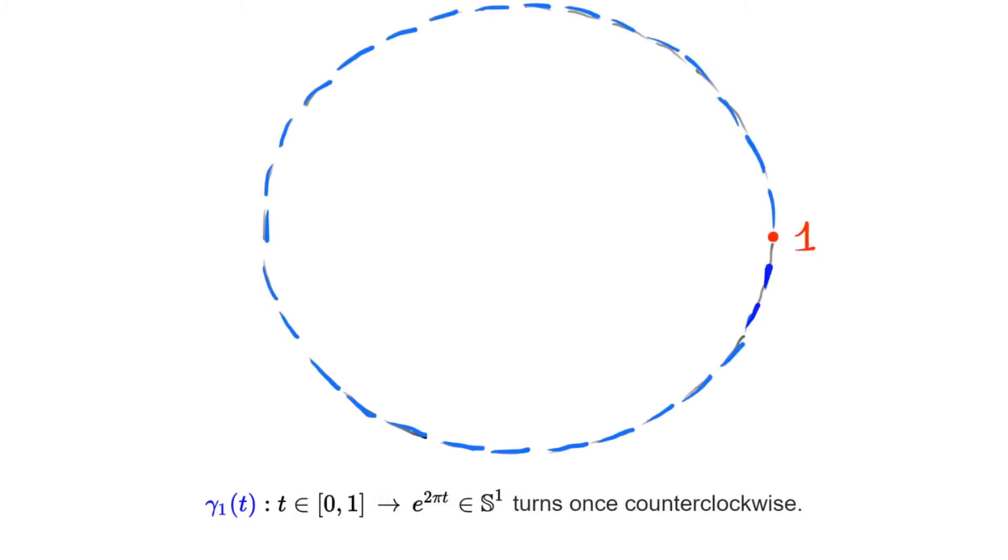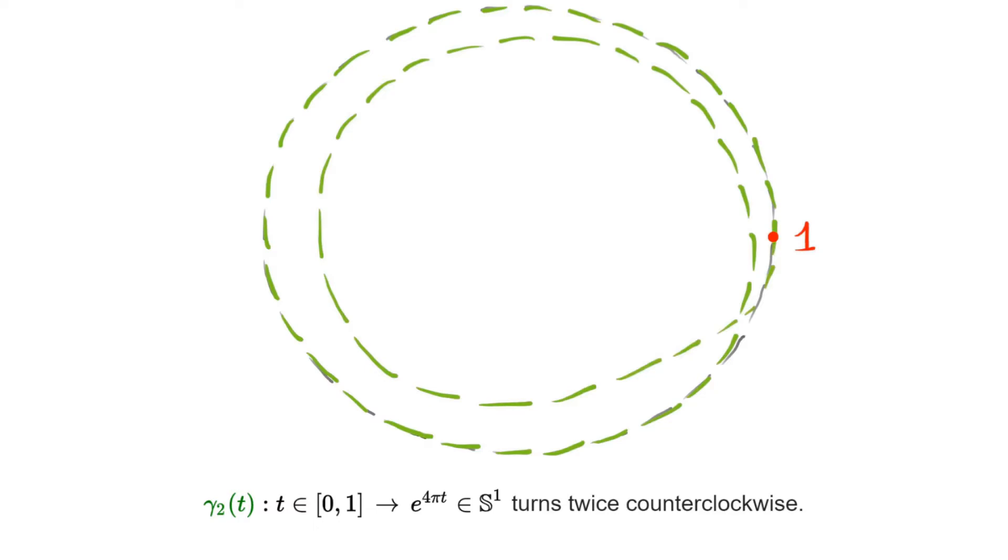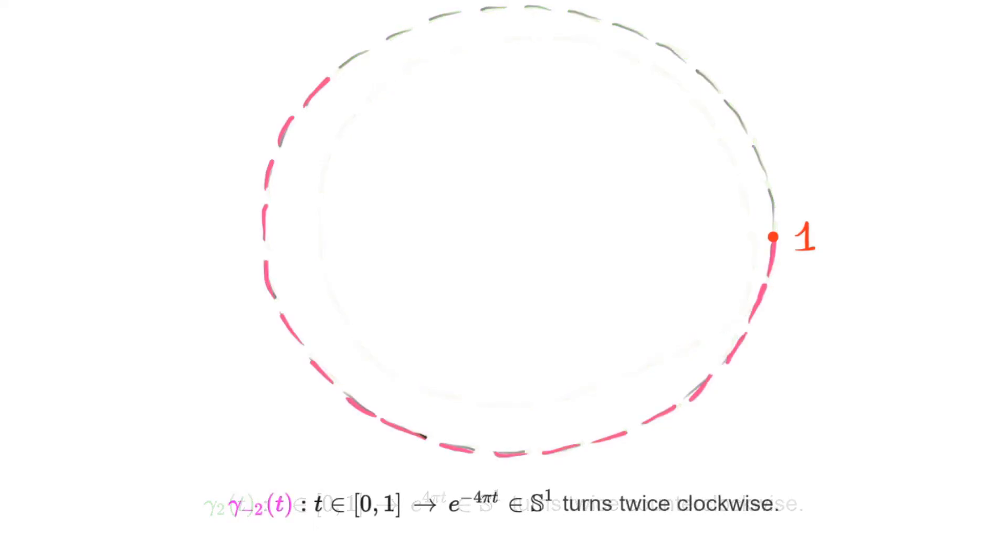Next, we can consider the loop that turns once counterclockwise around the circle and at constant speed. Similarly, we can consider the loop that turns at constant speed also counterclockwise but twice, or the loop that turns twice clockwise.